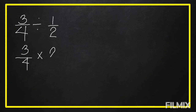The reciprocal of one-half is equal to two over one, and we're going to proceed to multiplication. So, three times two, the answer is equal to six. Four times one, the answer is equal to four. We're going to reduce this to lowest terms by dividing by two.